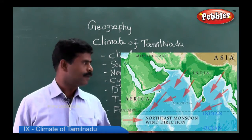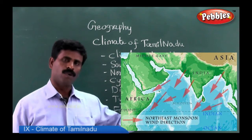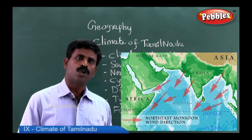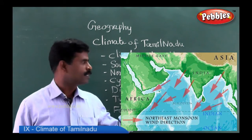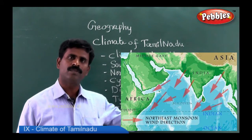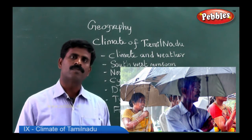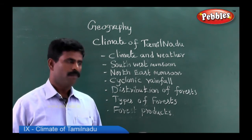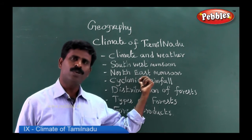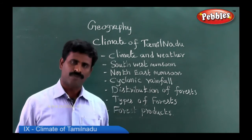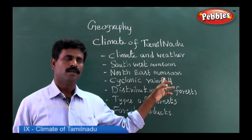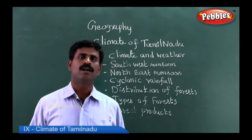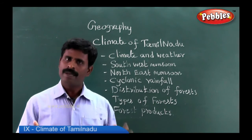The northeast monsoon occurs between October and November. This northeast monsoon is closely associated with cyclonic rainfall because of low pressure formation in the Bay of Bengal. By the very word cyclonic rainfall, you can understand that rainfall occurs because of cyclone formation. Particularly during the northeast monsoon and cyclonic rainfall, the coastal areas and interior parts of Tamil Nadu get abundant rain.